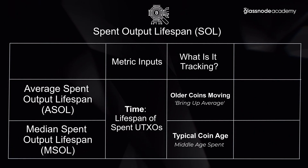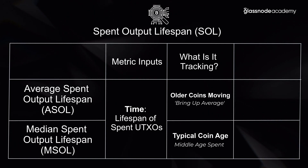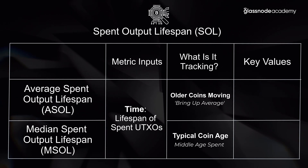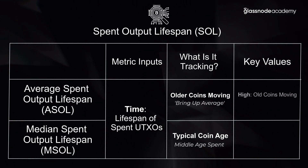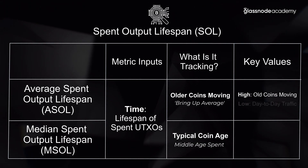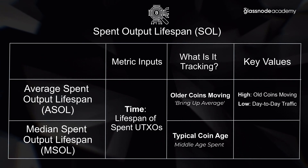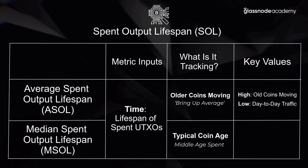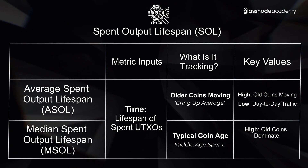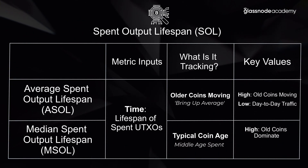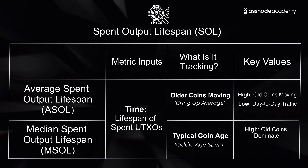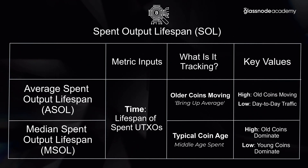This is trying to look at what does the day-to-day traffic look like — what is the most common value, the middle of the road. For the average spent output lifespan, high values mean that lots of old coins are on the move, bringing up the average, while a low value is typical of more day-to-day traffic. For the median SOL, a high value means that of the total pool of lifespans spent, the larger majority were high values — a larger pool of high values. When it's fairly low, it means young coins and more day-to-day traffic are dominating.